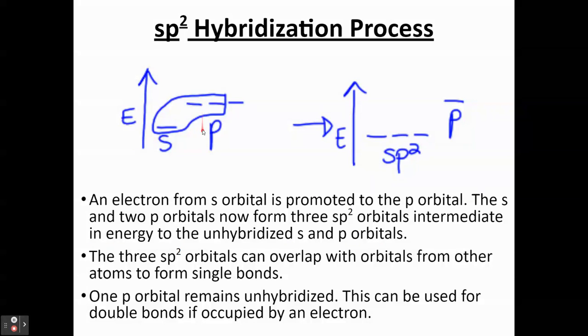And to do that, you have one S, one P coming together, and they'd be at some intermediate level between the S and the P here. And then the last one is a remaining unhybridized P orbital. So you just have these three here.